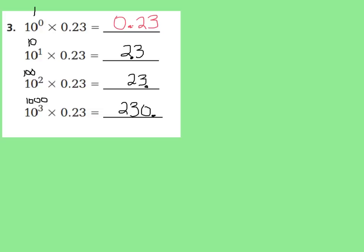So remember: when you multiply by a power of 10 greater than 1, you're going to move your decimal point to the right. But on question two, when you're multiplying by a power of 10 less than 1, you're moving your decimal point to the left.